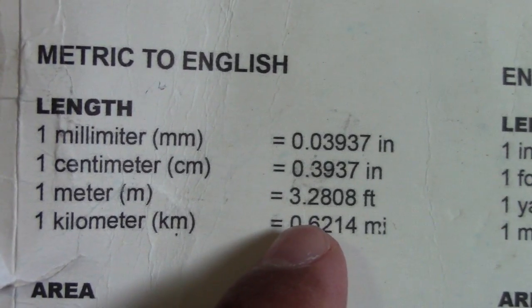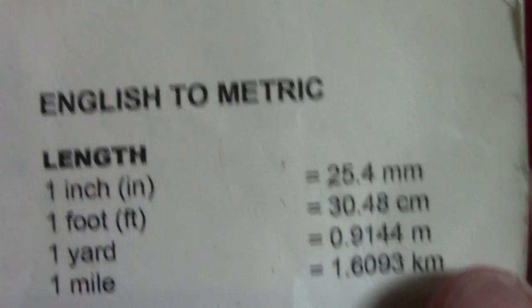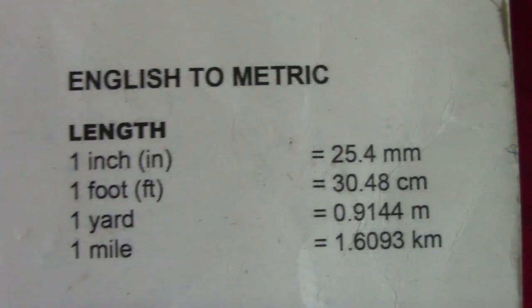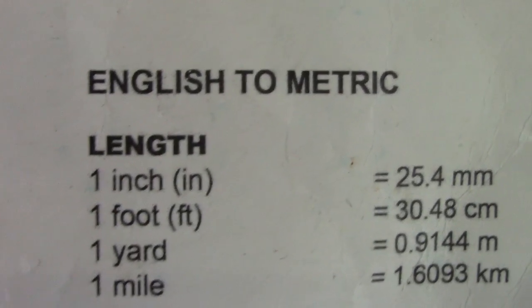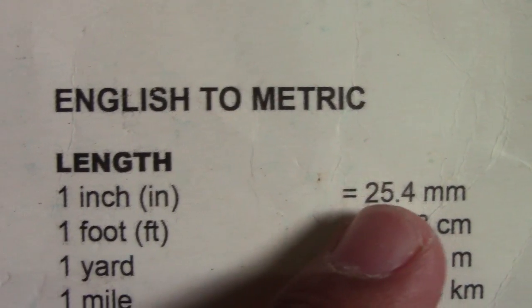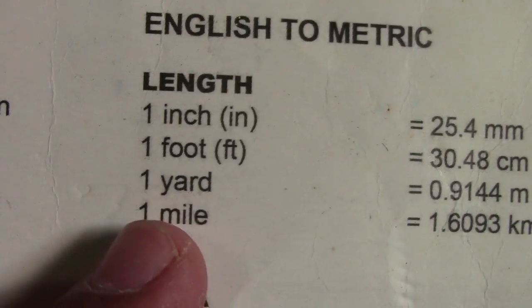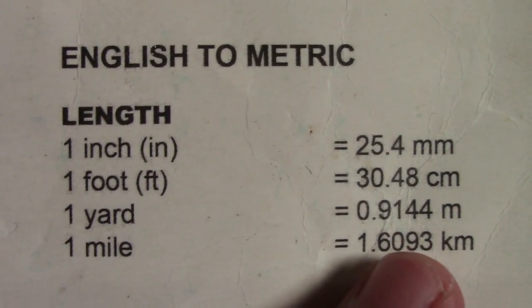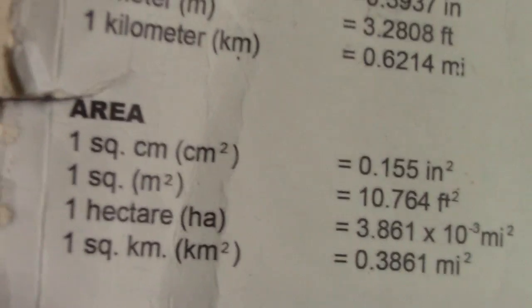That is how to convert millimeters to inches, centimeters to inches, meters to feet, and kilometers to miles. Next is English to metric — vice versa. To convert to millimeters multiply by 25.4; for feet multiply by 30.48; for yards multiply by 0.9144; and one mile equals 1.6093 kilometers.